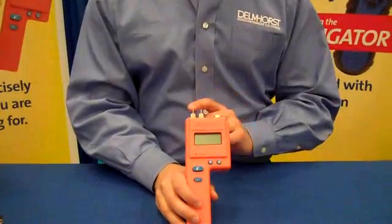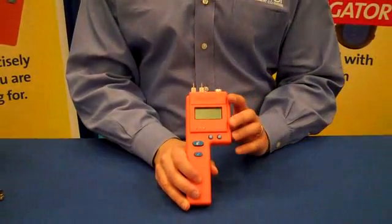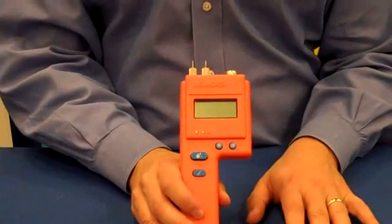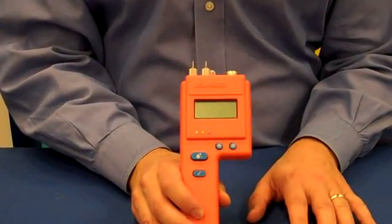The BD2100 is a pin-type moisture meter that allows you to check moisture content on drywall, wood materials, and other building materials such as concrete and insulation.